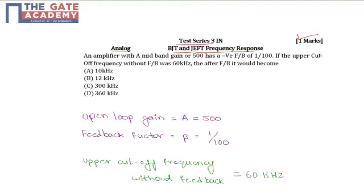An amplifier with a mid-band gain of 500 has a negative feedback of 1/100. If the upper cutoff frequency without feedback is 60 kHz, after feedback what would be the value? The options are: A is 10 kHz, B is 12 kHz, C is 300 kHz, and D is 360 kHz.